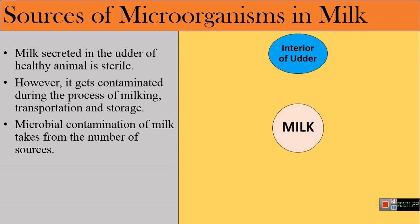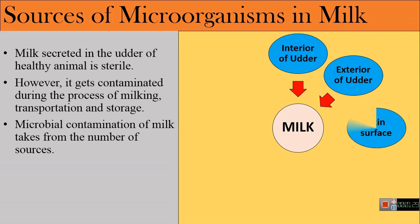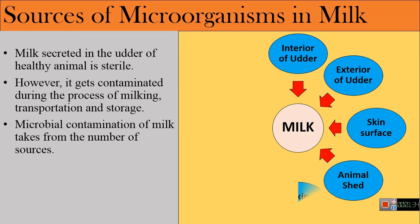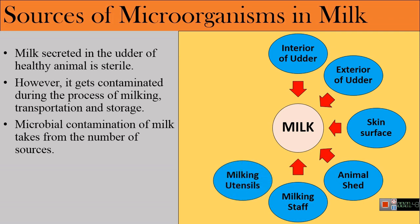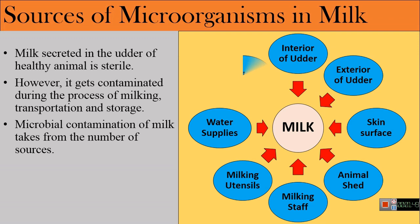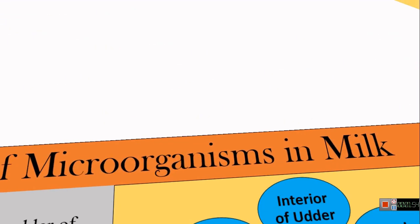the interior of the udder, exterior of the udder, skin surface of the animal, animal shed or cow pen (the surrounding area of the animal), milking staff or milkman, milking utensils and milking equipment, water supplies, and air. We will discuss each of these sources in some more detail.